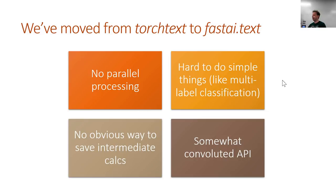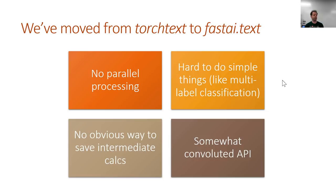So now we're going to move to NLP. We've seen this idea in every lesson of taking a pre-trained model, removing some stuff on the top, replacing it with new stuff, and getting it to do something similar. With conv_learner.pretrained, there was a standard way of sticking stuff on the top for classification. Then we learned we can stick any PyTorch module on the end and have it do anything we like with a custom head.